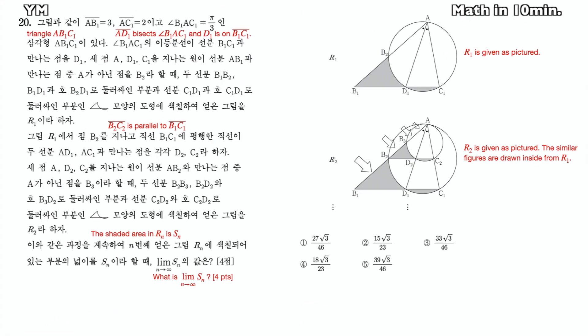This question equals the infinite sum of the areas of the shaded regions. The area of each region follows the form of a geometric sequence, so it is an infinite sum of a geometric series. What we need to find are the initial area R1 and the common ratio.